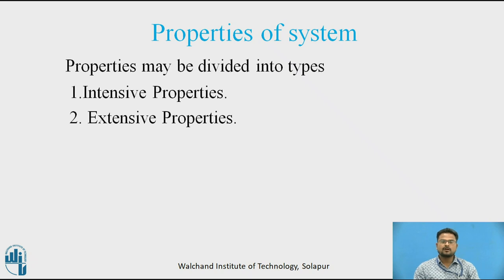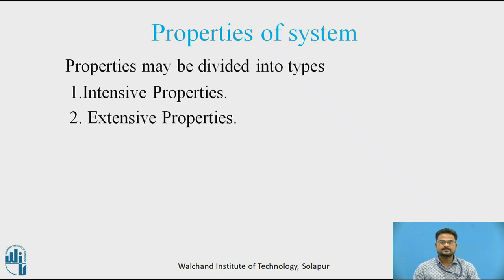The important properties of the system are: intensive property and extensive property. Intensive properties do not depend on the mass of the system. For example, temperature, pressure and density do not depend on the mass of the system. An intensive property may be defined as a point function, since it has a finite value when the size of the system approaches the point approaching zero. Intensive properties define the intensive state of the system. Examples are temperature, pressure and density.